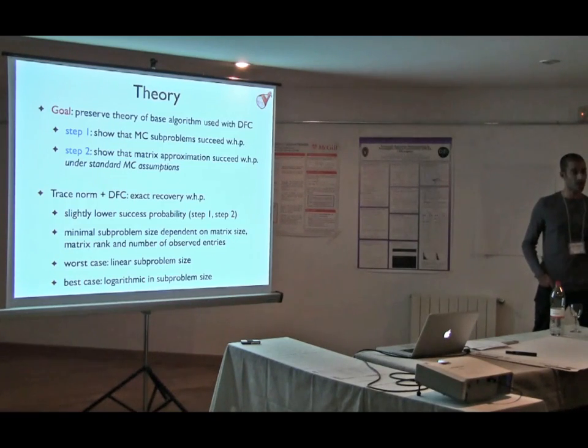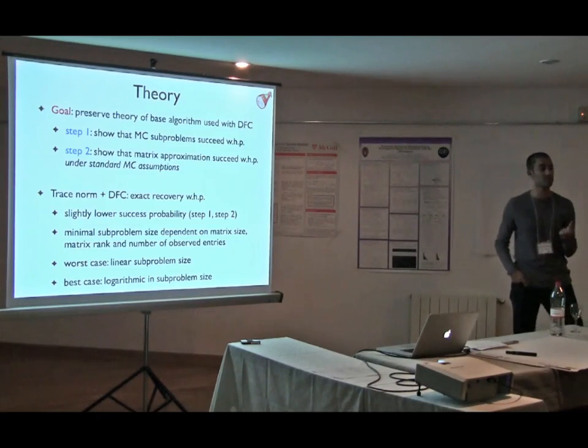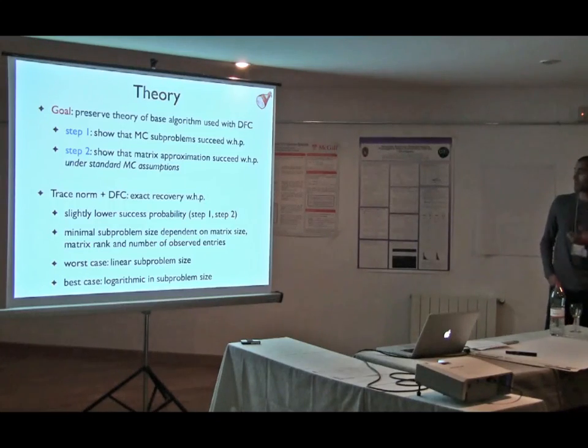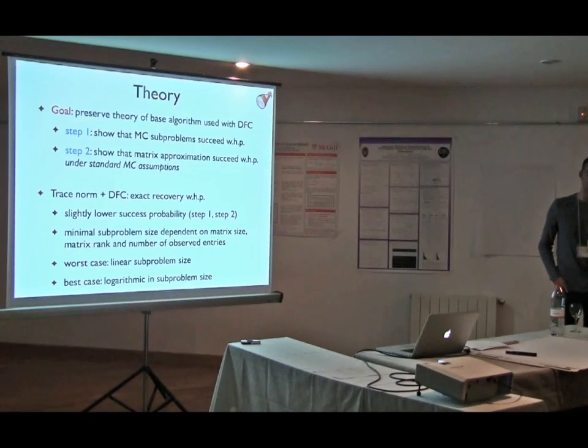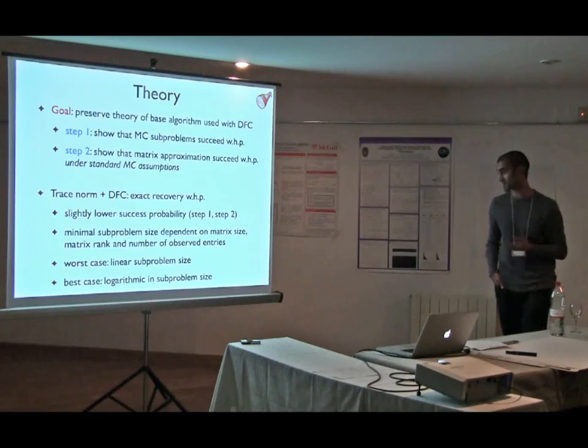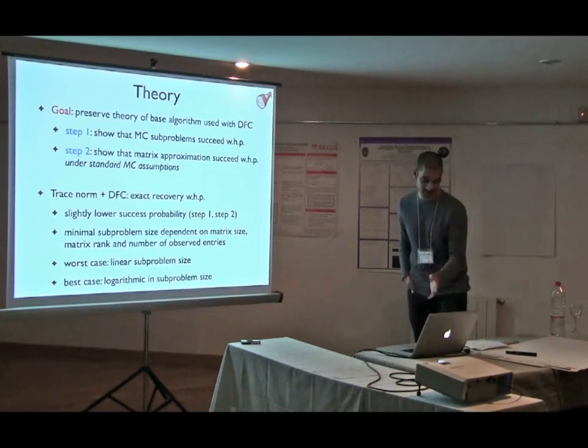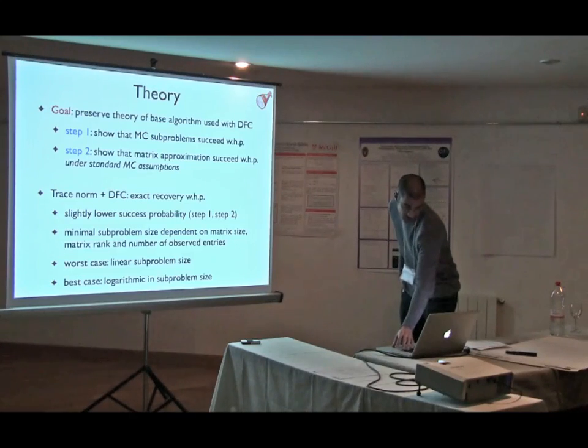And also, ideally you'd like to be able to sample a small number, you'd like your subsamples to be as small as possible, and we show that the subsample size that is allowable is dependent on matrix size, rank, and the number of entries that you've seen. In the worst case, it can be linear. In the best case, it can be logarithmic in the size, and it's usually somewhere in between in practice.